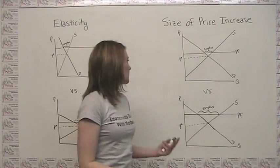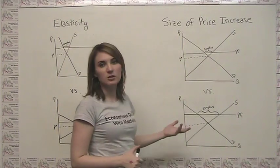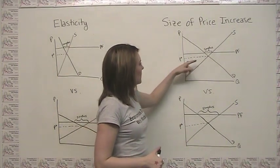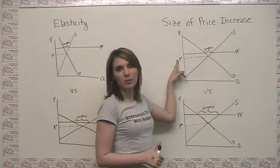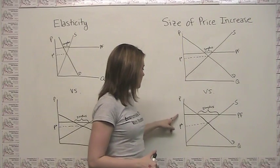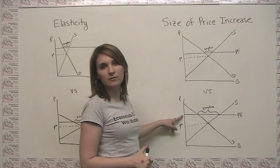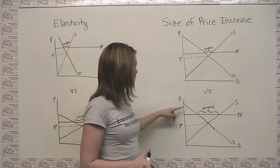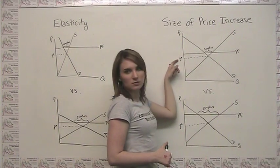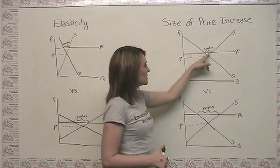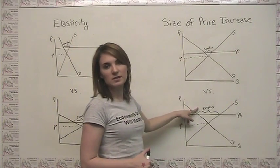The other factor that affects the size of the surplus that results is the size of the price increase. So in this first case, the price floor is placed just a small distance away from the free market equilibrium price. And in the second case, everything is the same except that we've placed the price floor further away from that free market equilibrium price. And we'll notice that the closer the price floor is to the free market outcome, the smaller our surplus is. So we get a smaller surplus here and a larger surplus here.